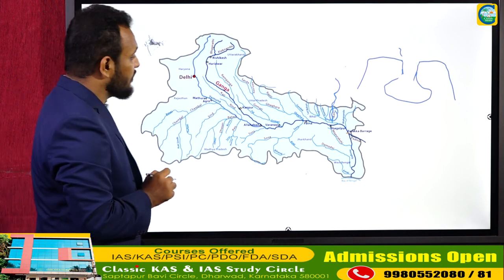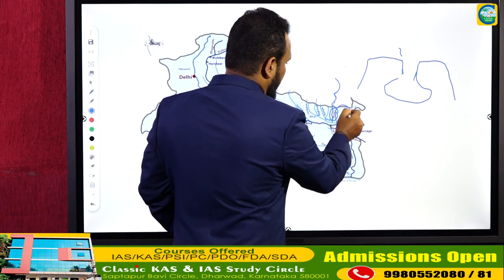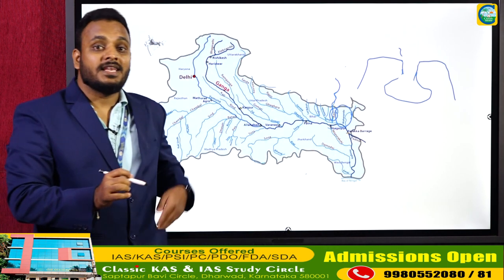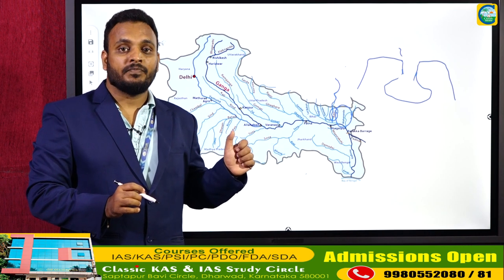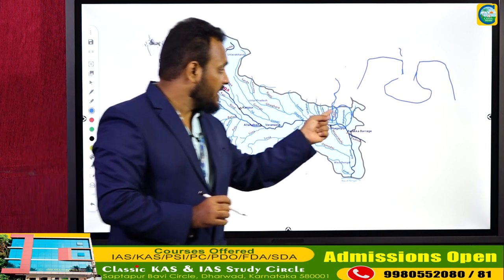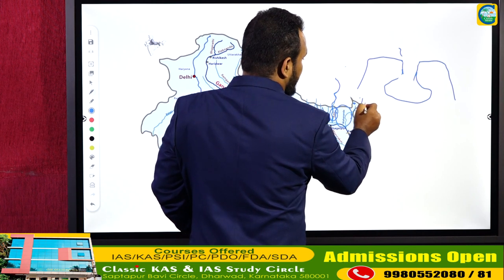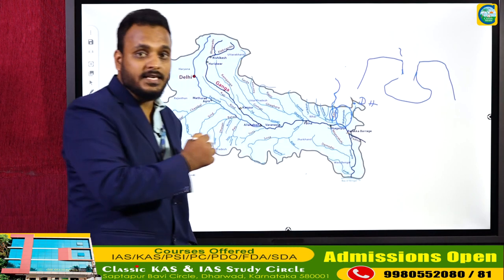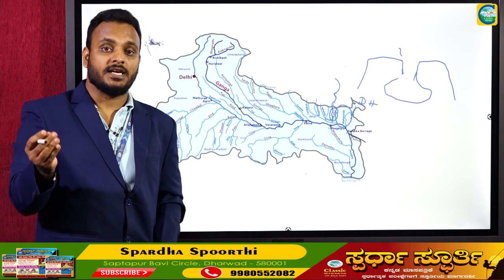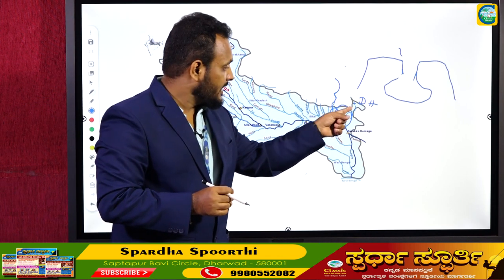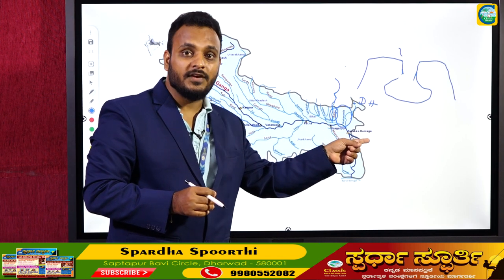The last important left bank tributary joining Ganga is Mahananda. This Mahananda originates from the Darjeeling Hills, which are present in West Bengal and Sikkim, and it joins Ganga near Bhagalpur, near Farakka Barrage.